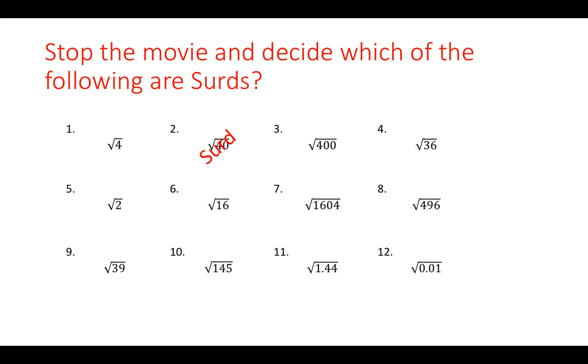The square root of 400, well, that works out in your calculator nicely to 20, so it's not a surd. The square root of 36 in question 4, the answer to that is 6, so it's not a surd. However, the square root of 2, if you try and work that one out, it gives you a very long decimal once again, so it's also going to be a surd.